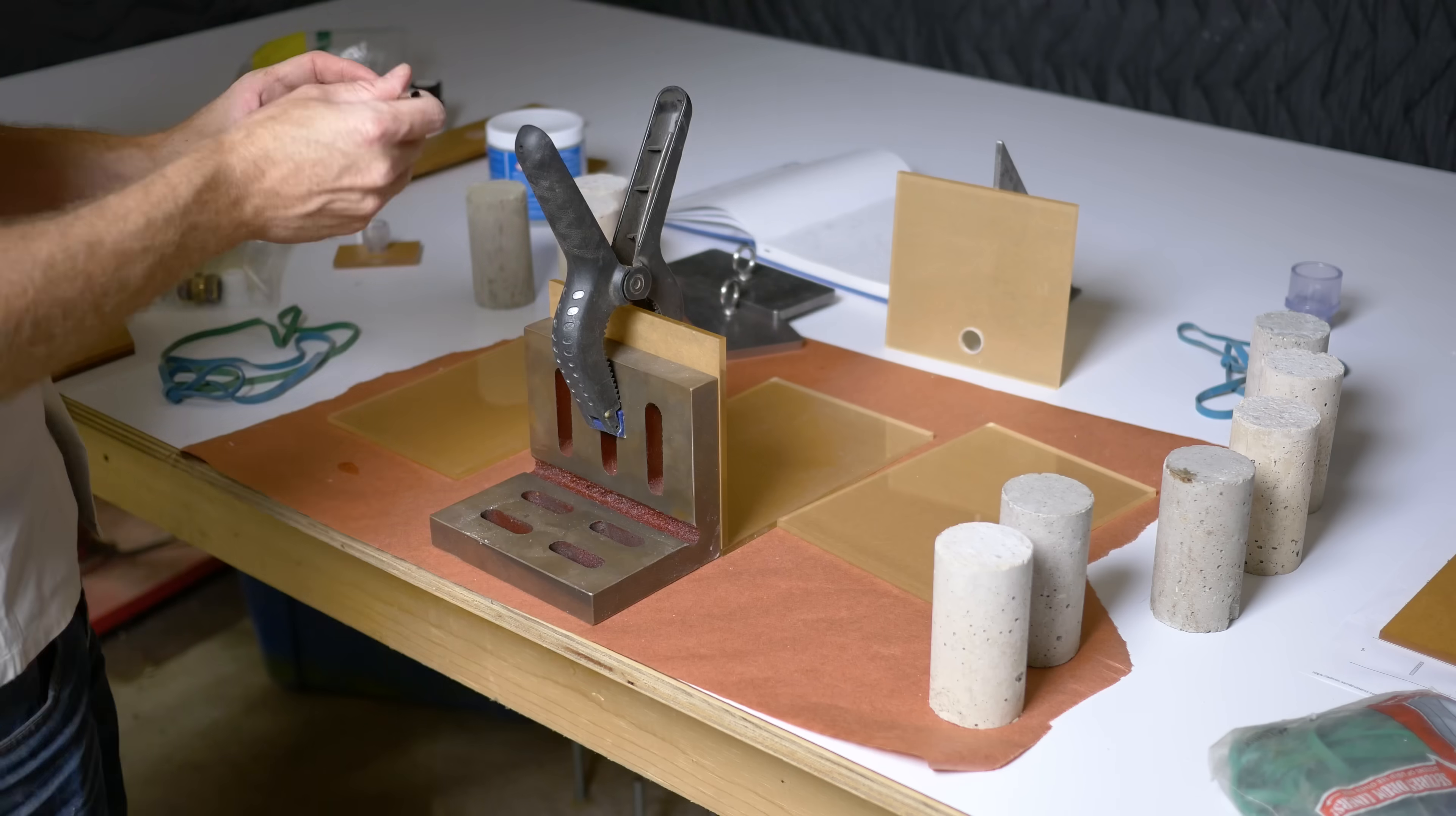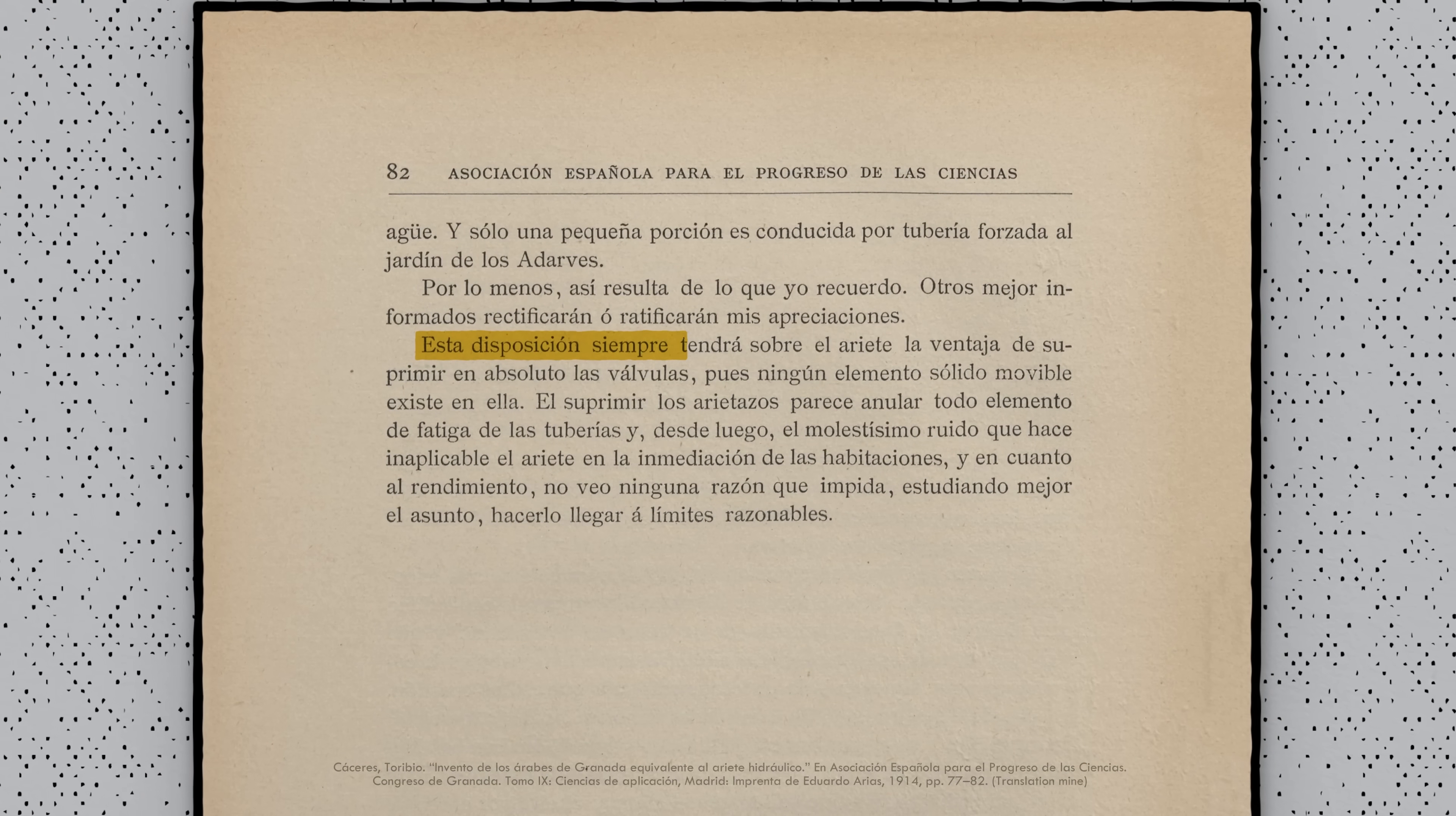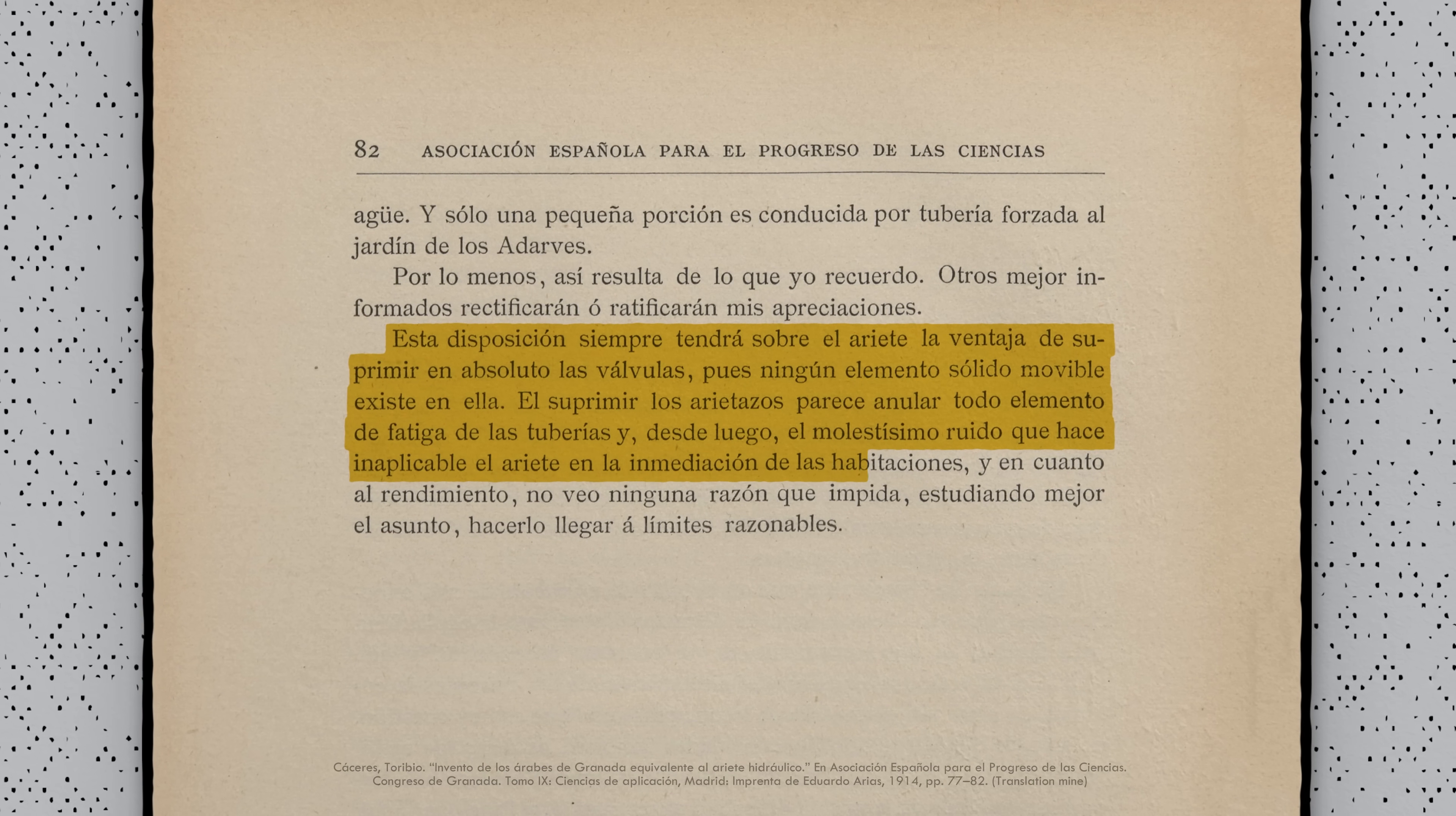In fact, I'm not the only one. Hydraulic ram pumps are pretty popular around the internet and in rural areas that have abundant water but no electricity. They were well known by the time Professor Cáceres did his experiment in 1911. In his paper, he said about the pulsar pump, this arrangement will always have, over the hydraulic ram, the advantage of eliminating valves entirely since it contains no moving solid parts. Doing away with the ram stroke seems to remove any source of fatigue in the pipes and, of course, the very annoying noise that makes the ram inapplicable near living quarters.